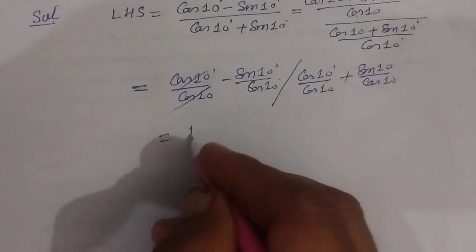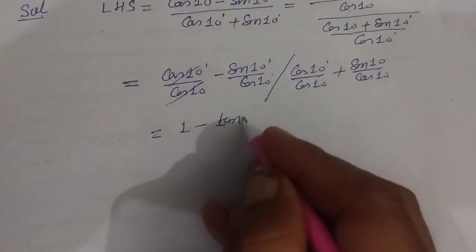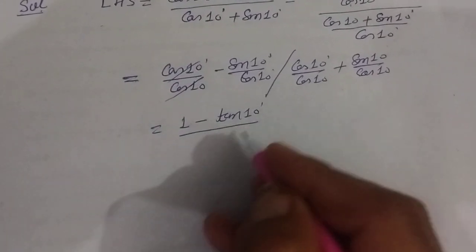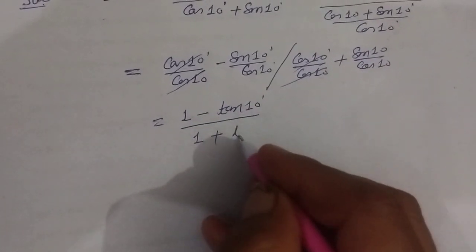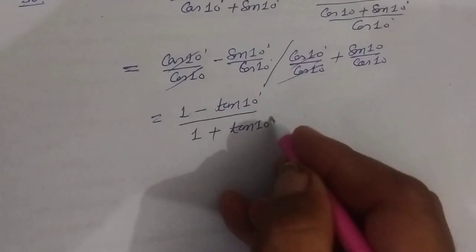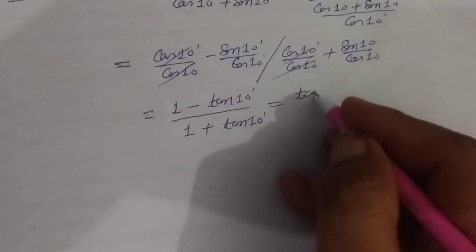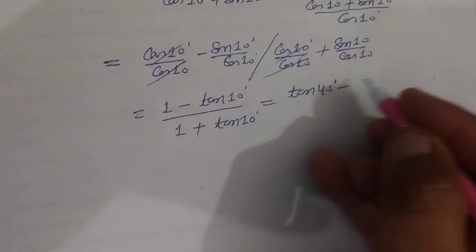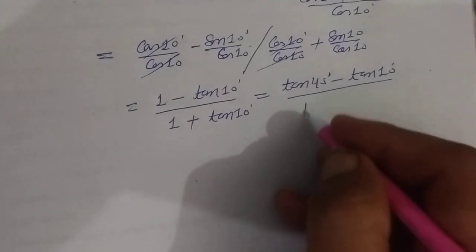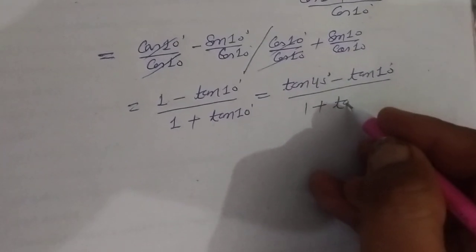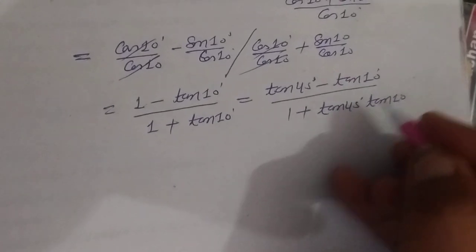So this is 1 minus tan 10 upon 1 plus tan 10. Now 1 is written as tan 45, so this becomes tan 45 minus tan 10 upon 1 plus tan 45 tan 10.